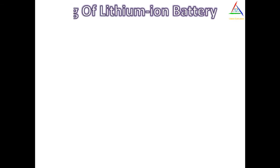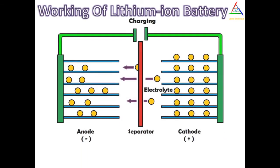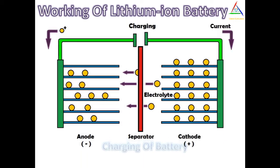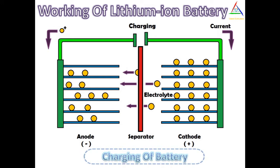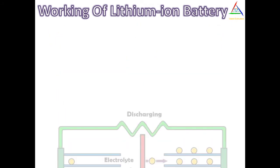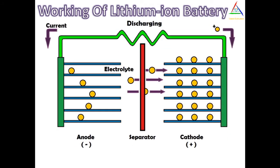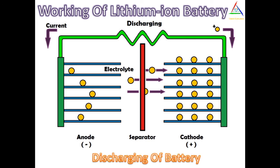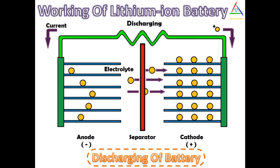When the battery charges up, the lithium cobalt oxide positive electrode gives up some of its lithium ions, which move through the electrolyte, and hence the battery stores energy. During discharge, these lithium ions go back to the lithium cobalt oxide from carbon, and hence the battery provides energy to our device so it can work.